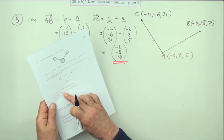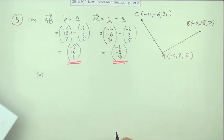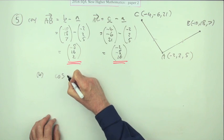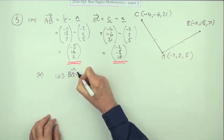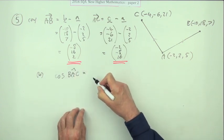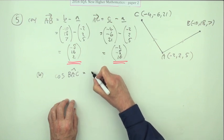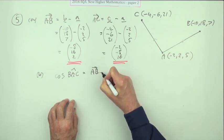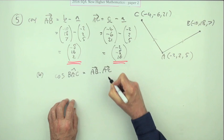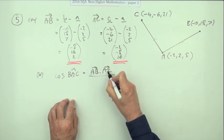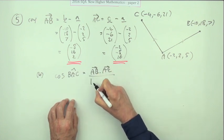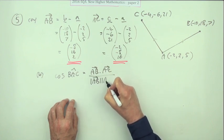In part b, hence or otherwise find the size of angle BAC. We're just probably going to go straight in with cos BAC will be, and just use that rearrangement of the scalar product, so it'll be AB dot AC divided by the scalar product.